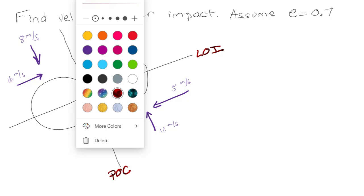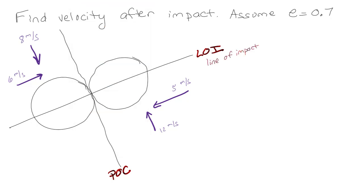So again, we have the line of impact and the plane of contact. I've already broken the velocities out into their components along the LOI and the POC. If you're not given that, that's always the first step.